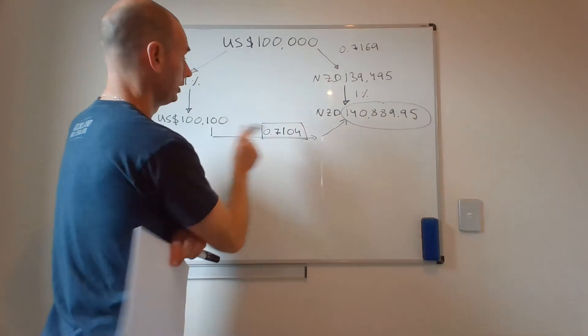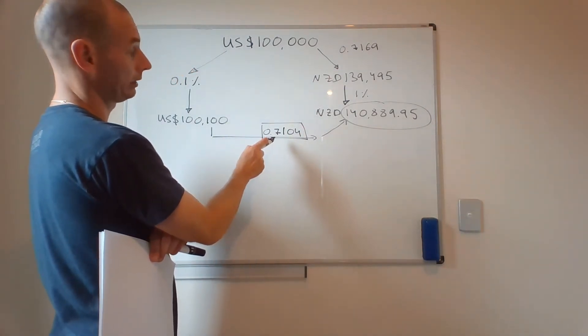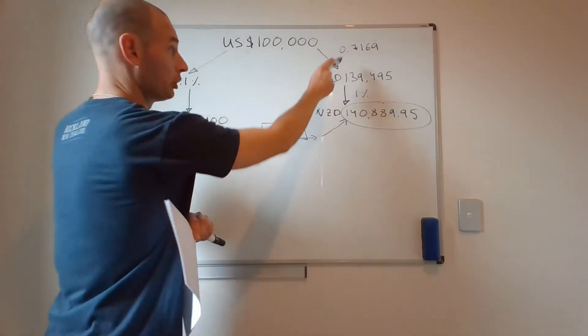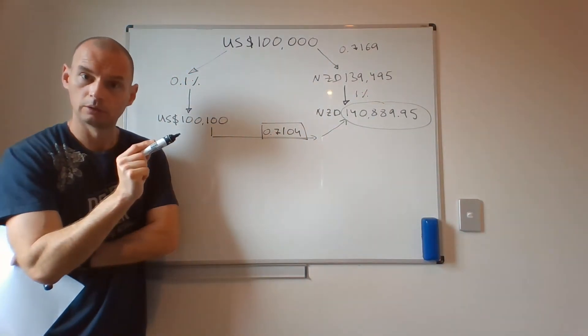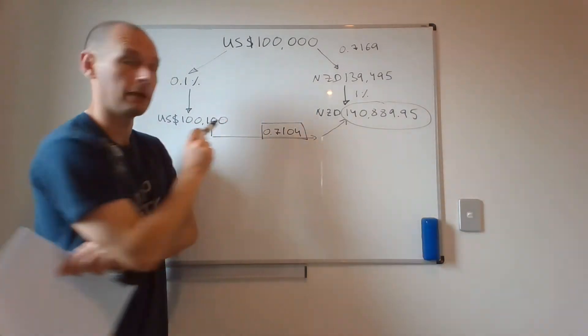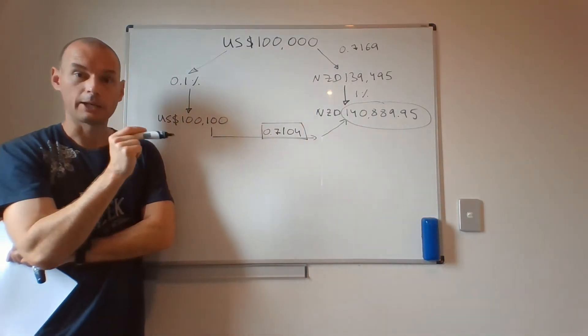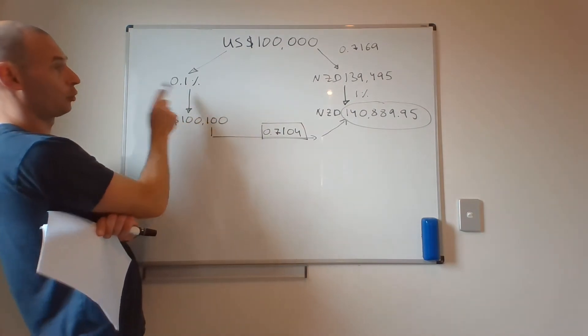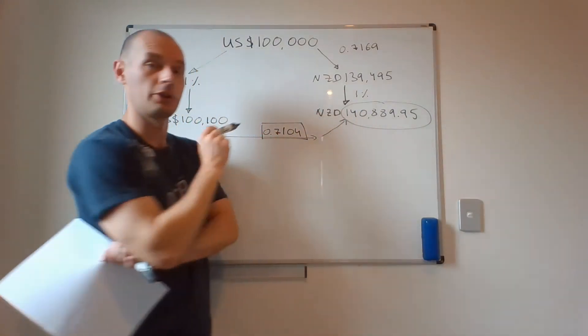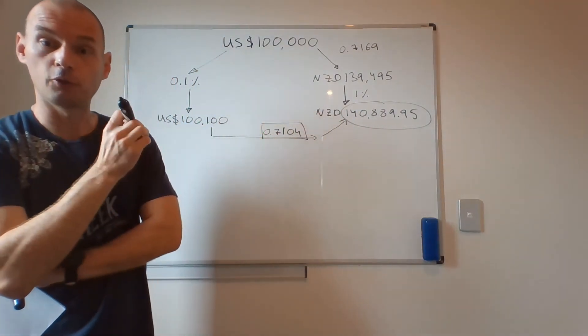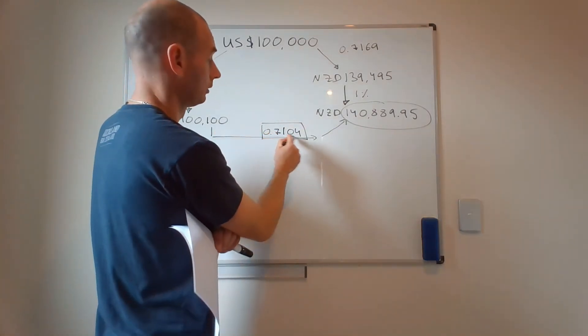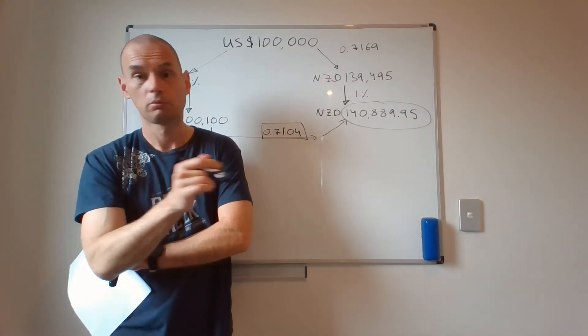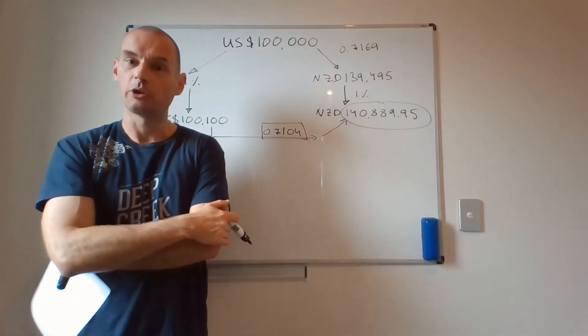And the exchange rate that would give you exactly the same cash flow is 0.7104. Notice that New Zealand dollar has depreciated, has become cheaper relative to the American dollar. Yes, you could in principle borrow in America at this low rate, invest in New Zealand for the higher rate, but all your differences will be completely wiped out by the change in the exchange rate.